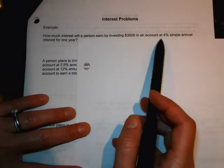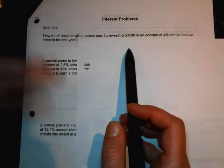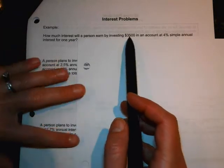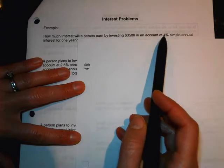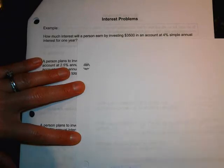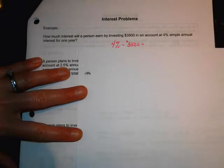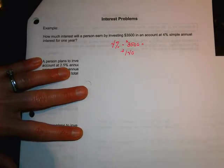To figure out how much money an account will make in simple interest, you just want to take how much is invested and multiply it by the interest rate. In this case, it's 4%. So, 4% times $3,500 is equal to $140.